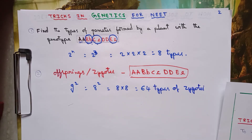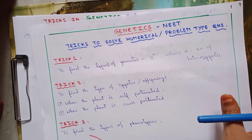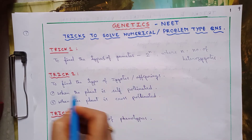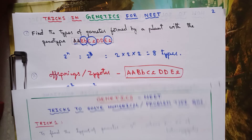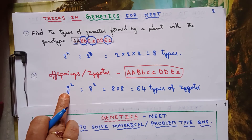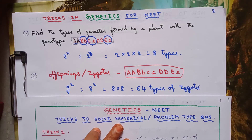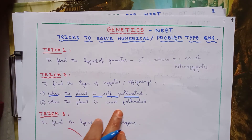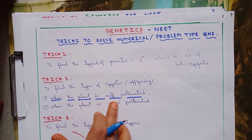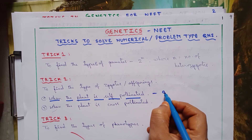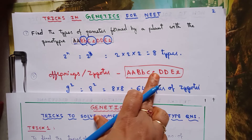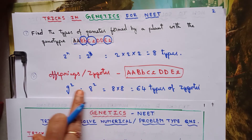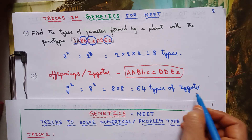This is trick 2 to find the types of zygotes or offsprings. If the plant is self-pollinated, we apply the formula: gametes squared. First find how many types of gametes are formed from that particular plant, then square it — giving 64 types of zygotes. If the plant is cross-pollinated, we multiply the gametes formed by one plant with the gametes formed by another plant.